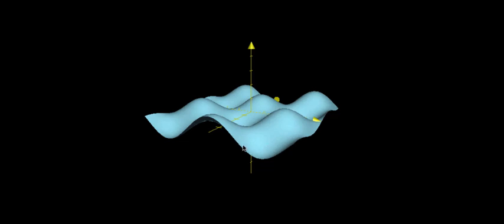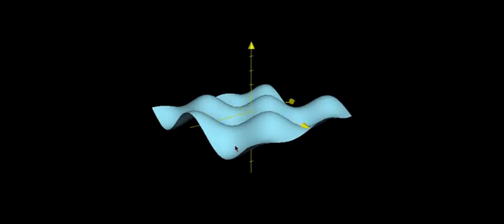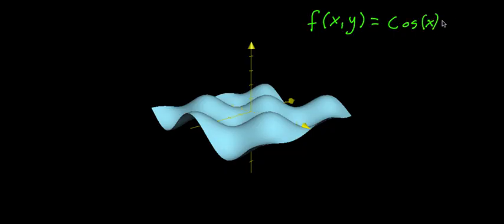So in the last video, I described how to interpret three-dimensional graphs. And I have another three-dimensional graph here. It's a very bumpy guy. And this happens to be the graph of the function f of xy is equal to cosine of x multiplied by the sine of y.